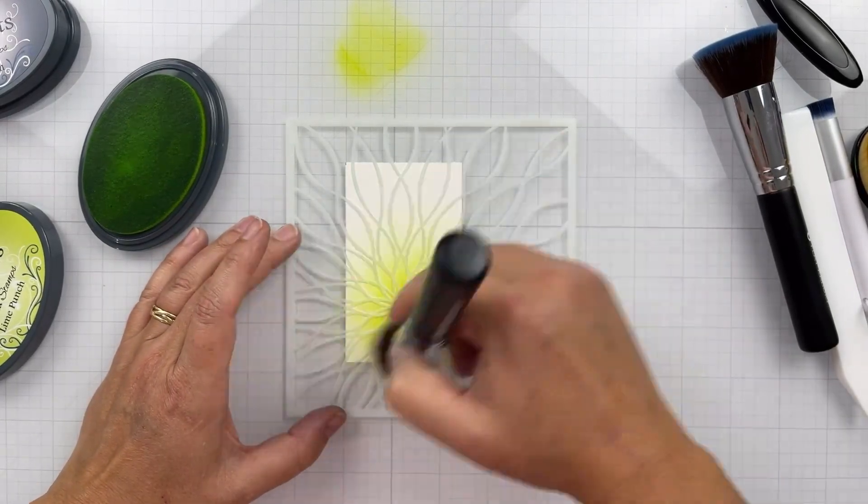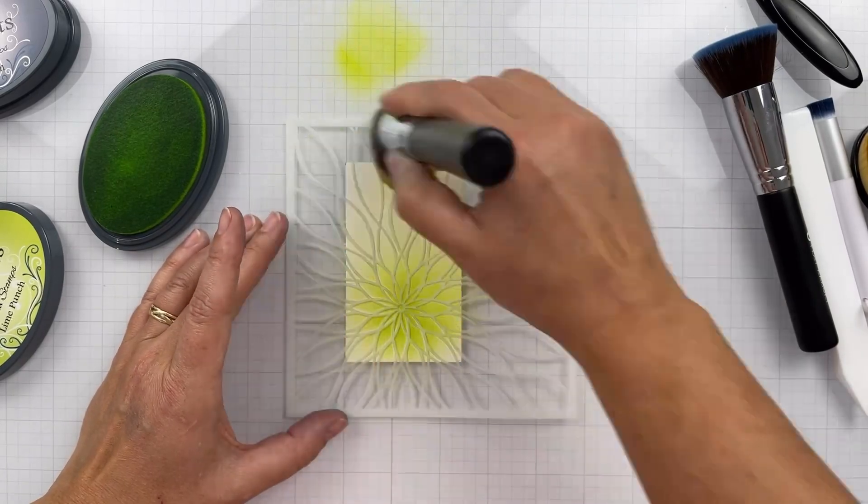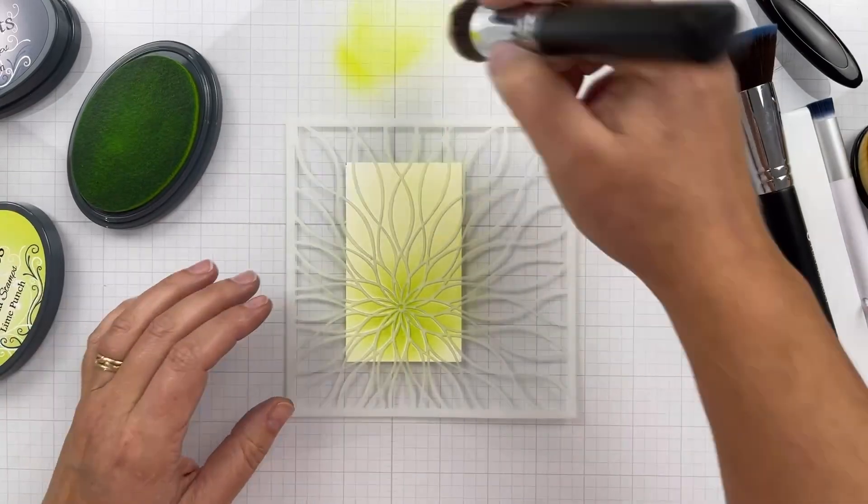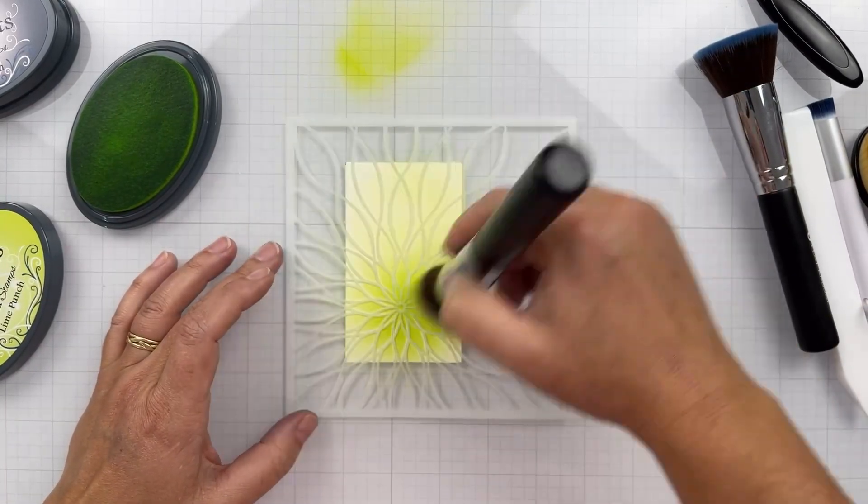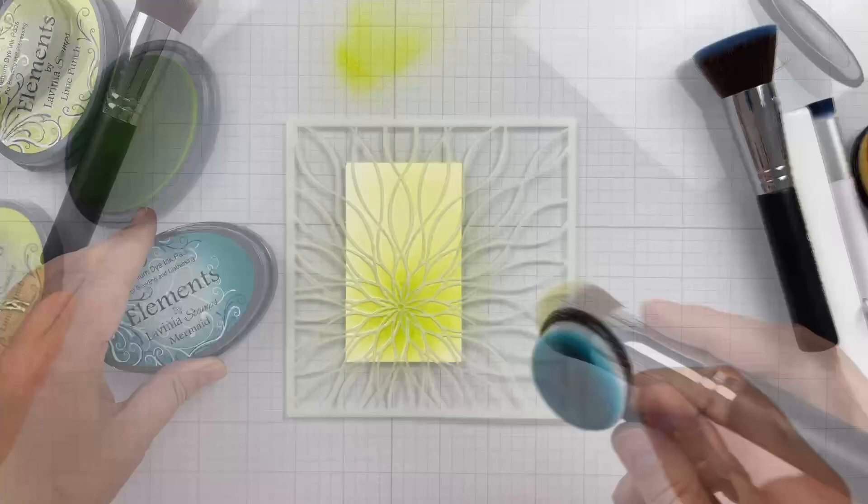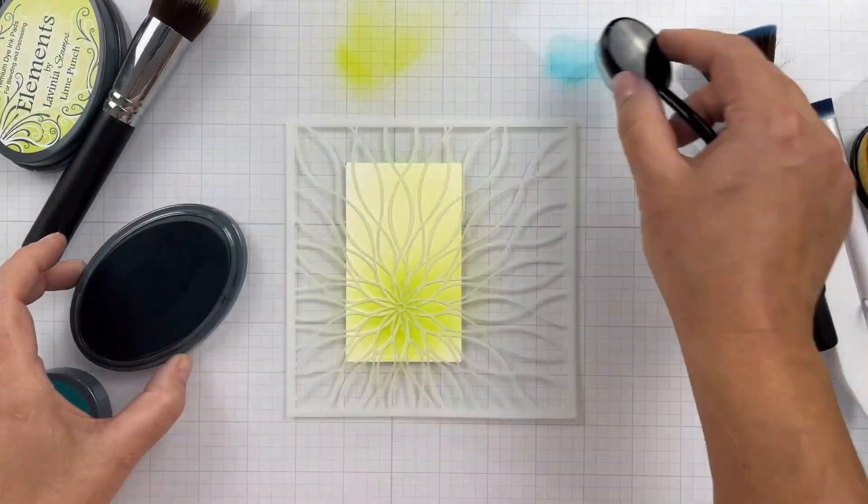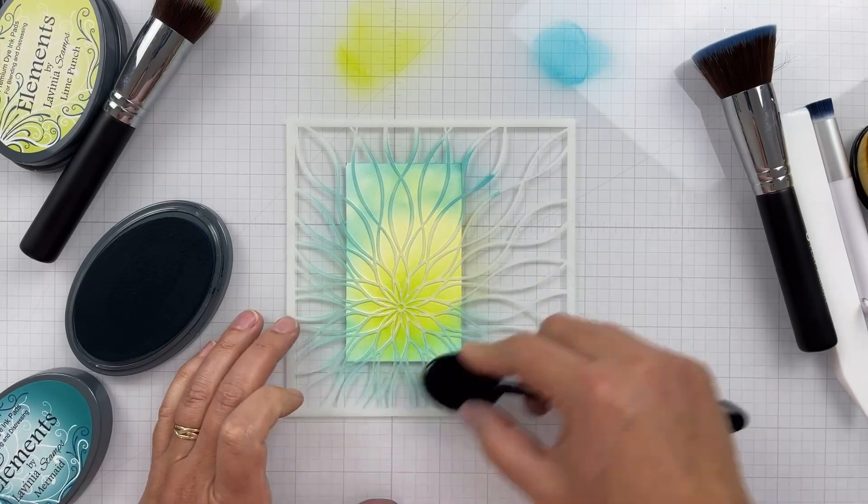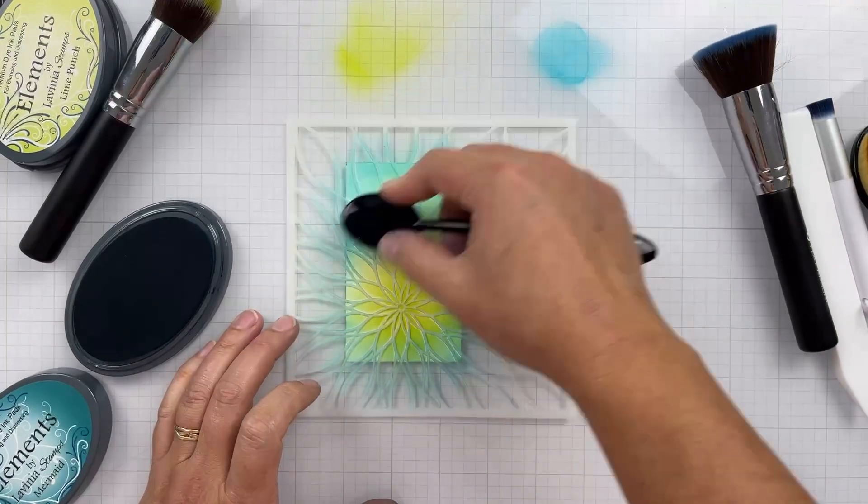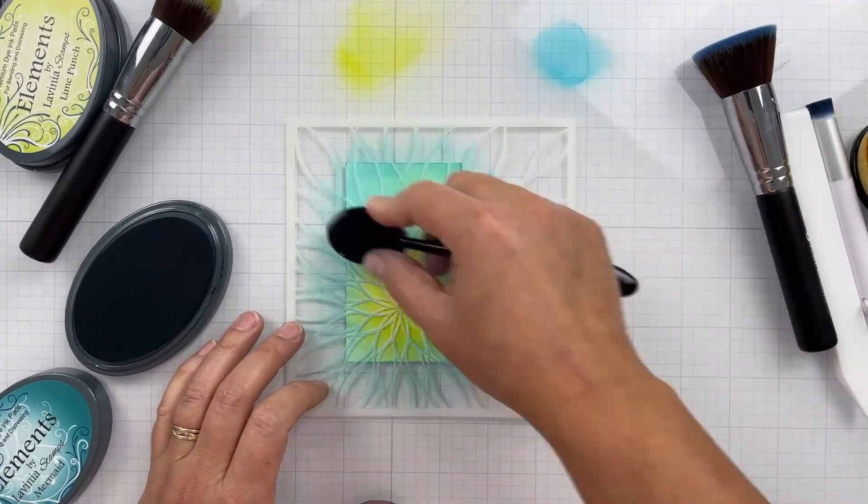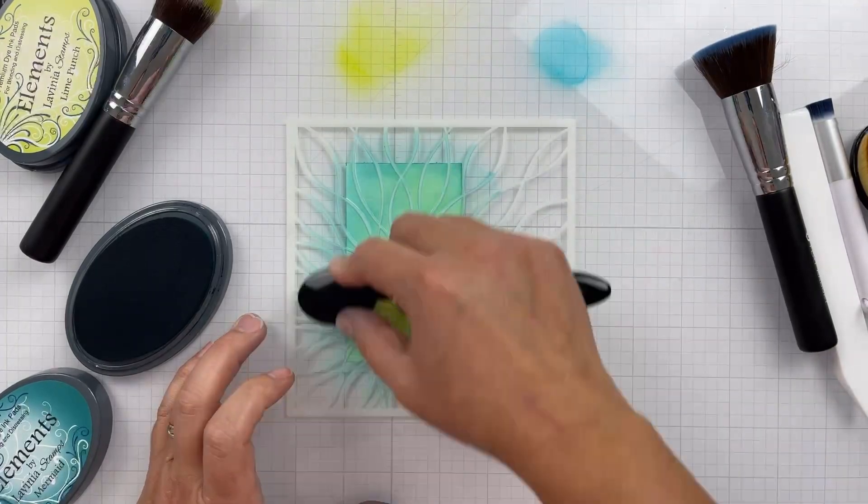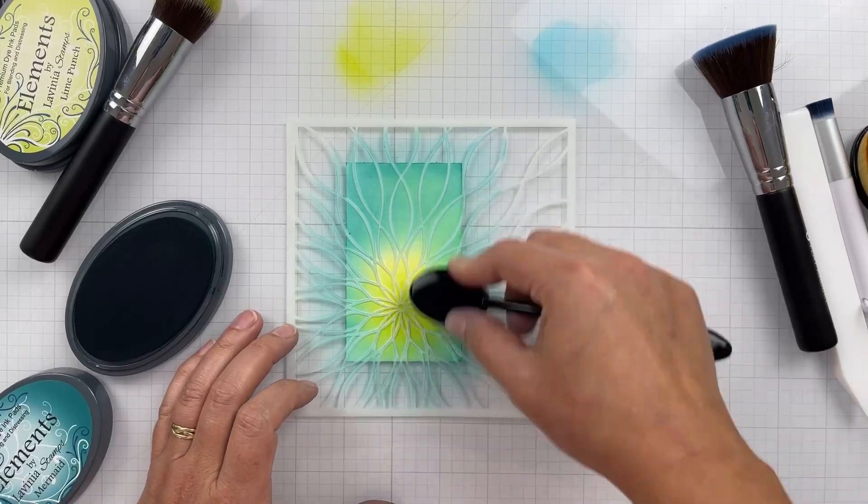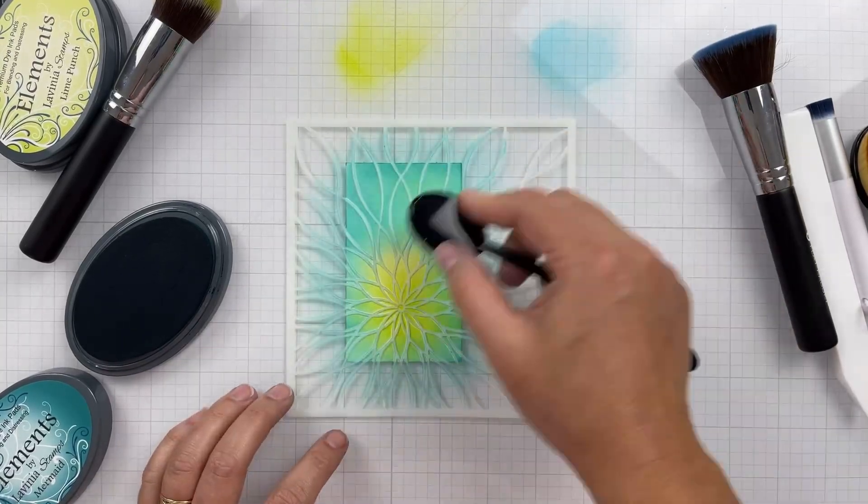Now I'm coming in with another makeup brush, a tapered kabuki, using Lime Punch and starting with the center. I just changed the location of my floral image. We're going to change it again when I put the cards together. Fading out the Lime Punch there from the center and now I'm going to come in with Mermaid and blend that till I'm happy with the color.